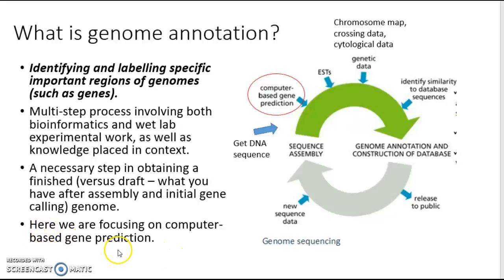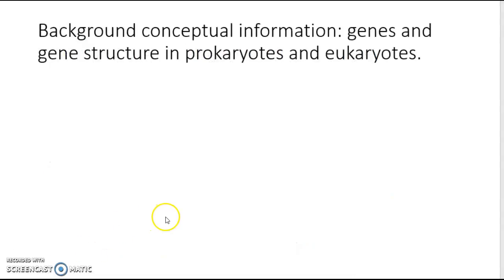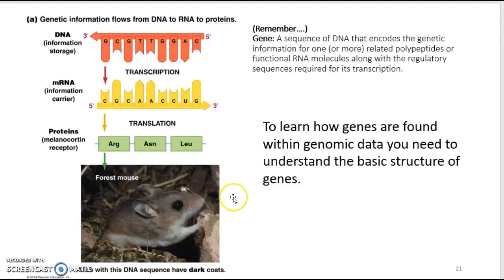We're going to focus in this series of lectures on computer-based gene prediction — figuring out how you go from a long sequence to knowing this is a gene and annotating it. To do that, you need background knowledge, including the basics of gene structure in prokaryotes and eukaryotes. A gene is a sequence of DNA that encodes the genetic information for one or more related polypeptides, proteins, or functional RNA molecules such as tRNA or rRNA, along with the regulatory sequences required for transcription.